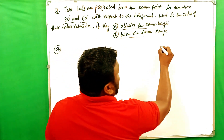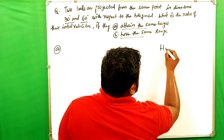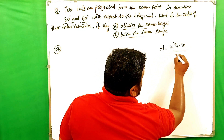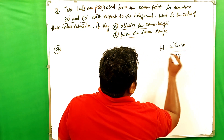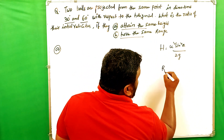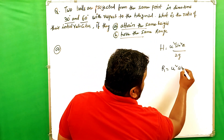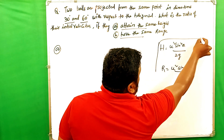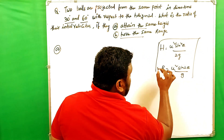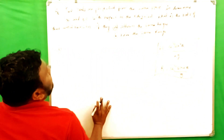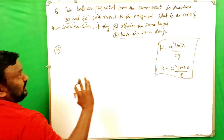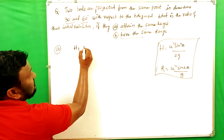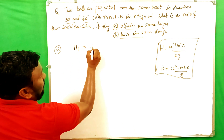The max height formula is H = u² sin²θ / 2g, and the range formula is R = u² sin2θ / g. These are the two formulas we are going to use. For the first condition — same height — we set h1 equals h2.